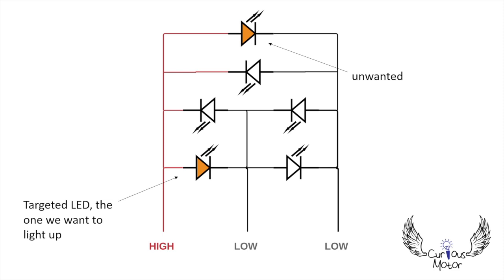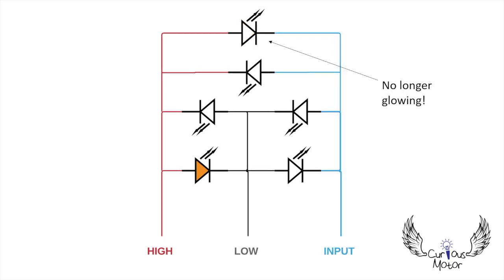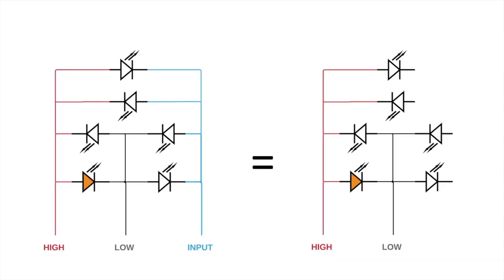To solve this problem, all we have to do is set that pin as an input pin. This puts the unused pin to a high impedance state, or in other words, the pin acts as an open circuit. So it's as good as saying that the trouble-causing pin is no longer connected to the circuit.